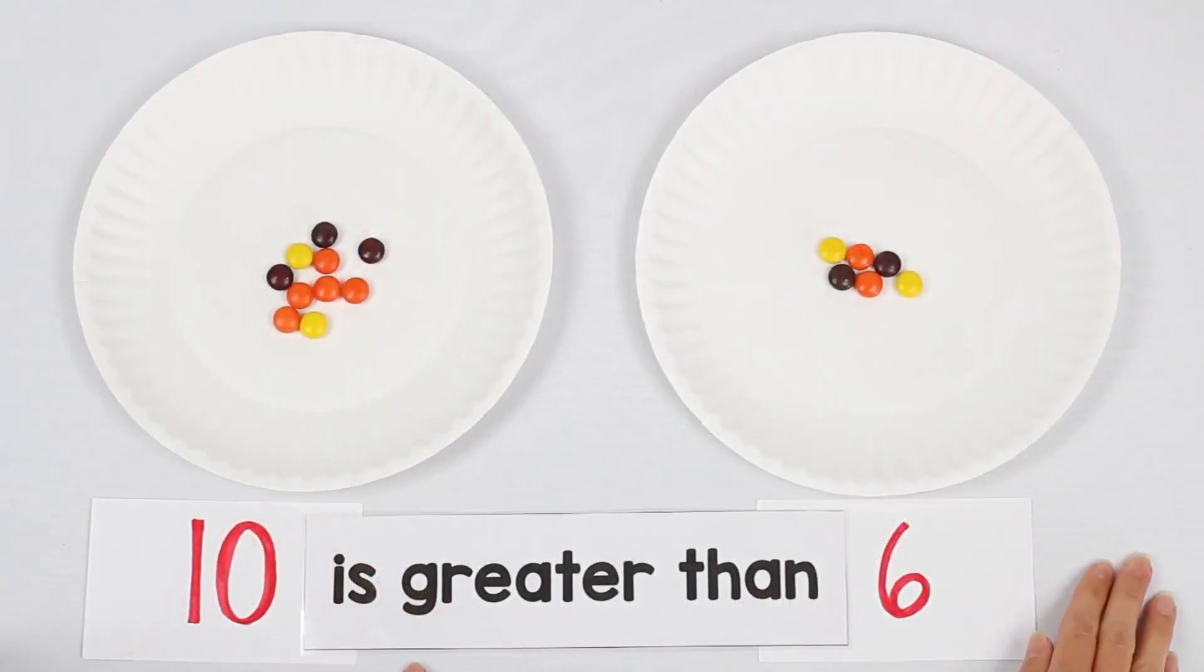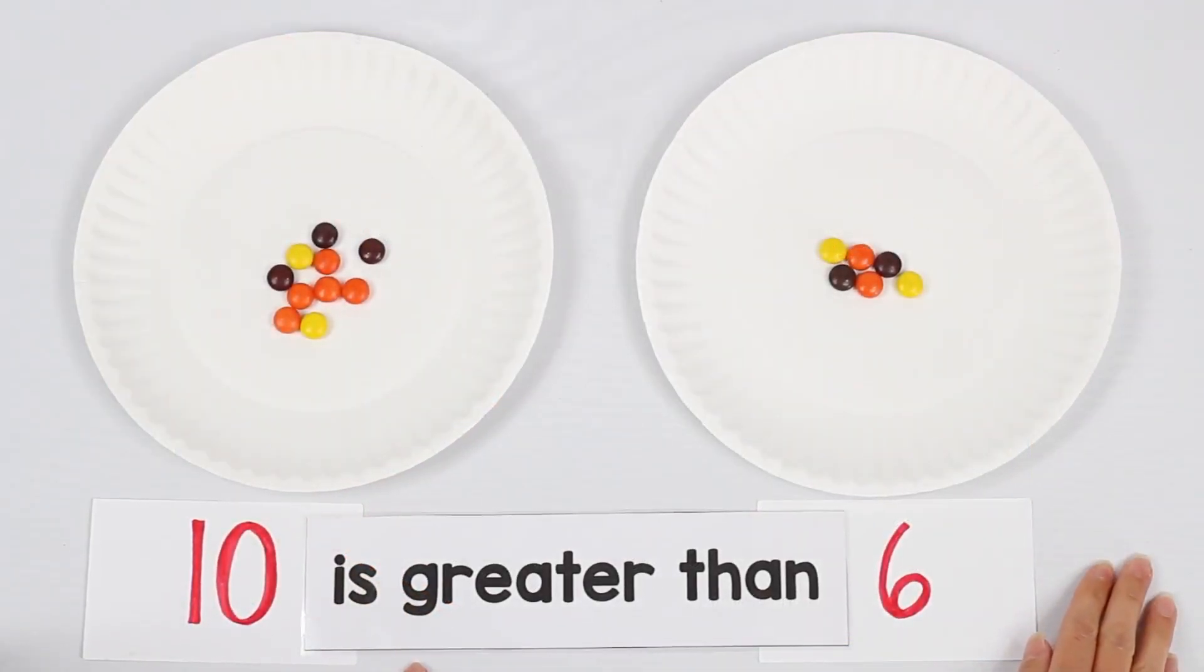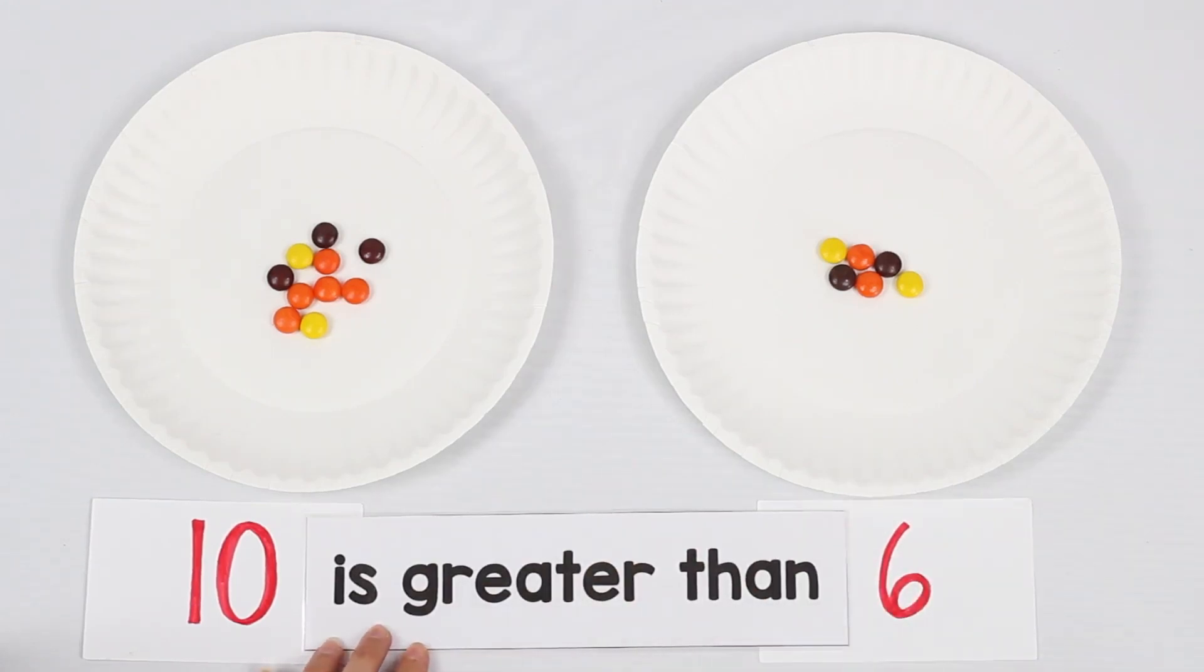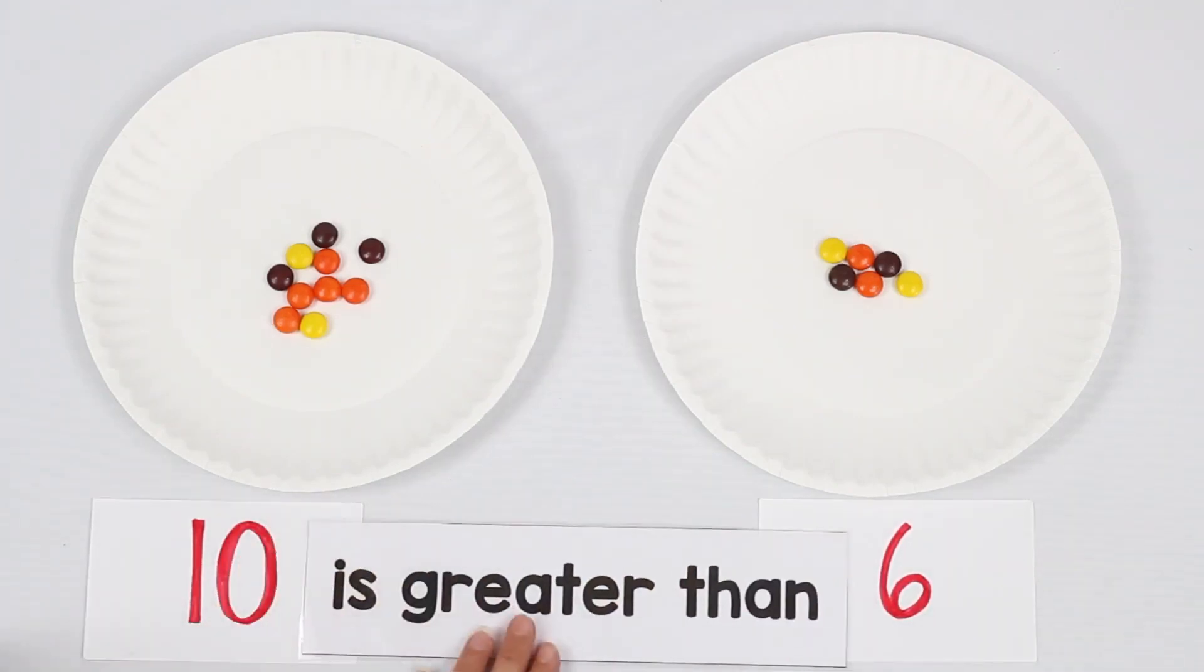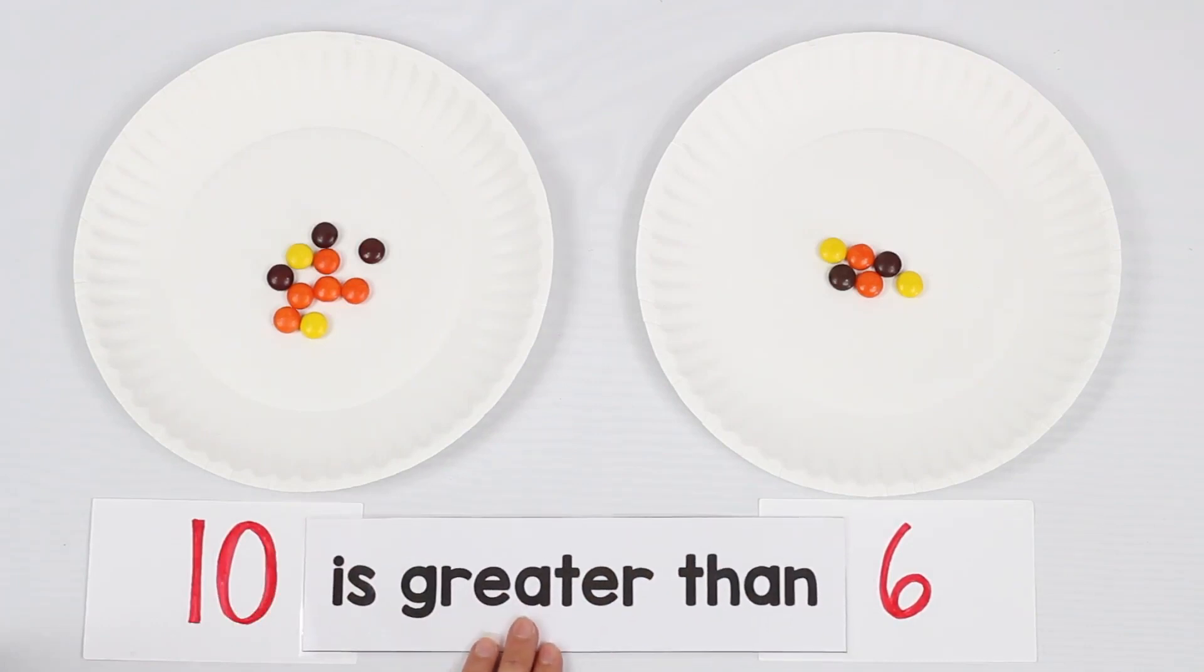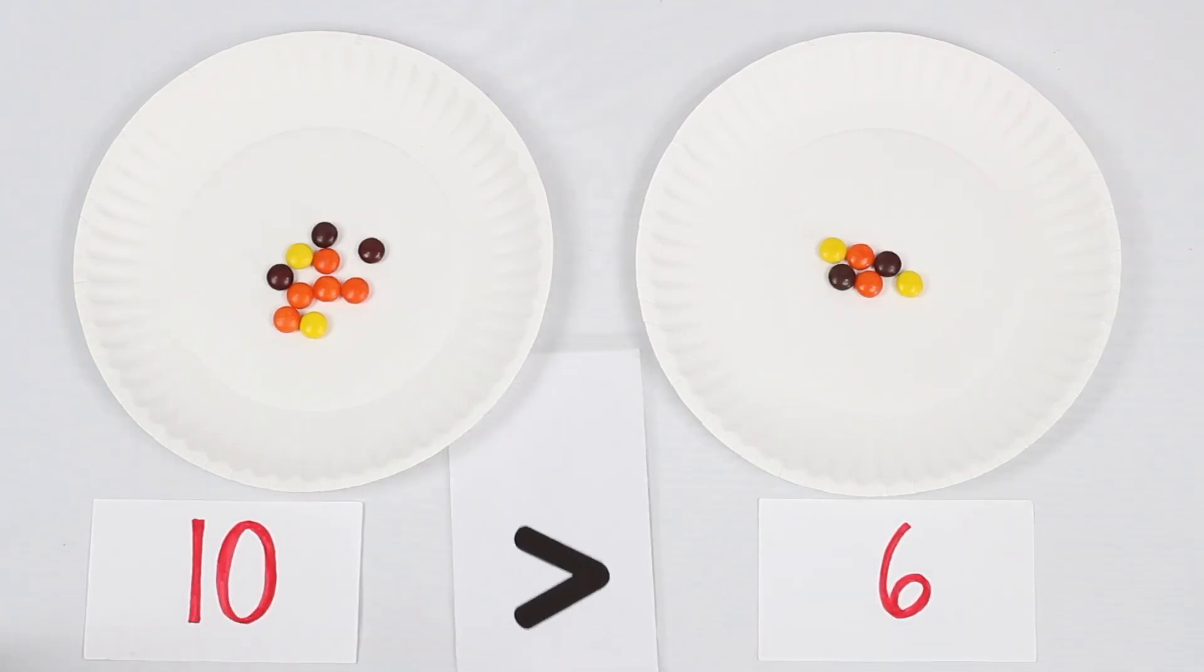Now do some more candy comparisons like we did previously. And this time, after using the words of comparison, change those out for the symbols and practice reading the comparison. 10 is greater than 6. Do several more examples, some with less than and equal to. But each time, start with the words first and then change those out for the symbols.